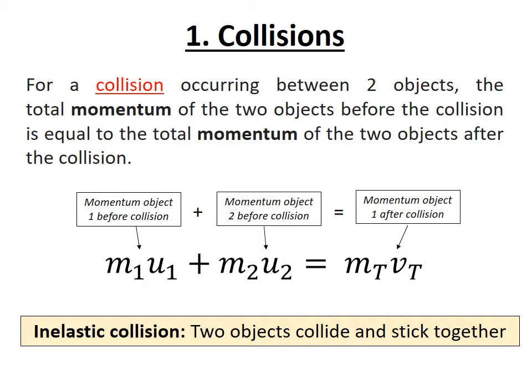Let's start with collisions. For a collision occurring between two objects, the total momentum of the two objects before the collision is equal to the total momentum of the objects after the collision. Now there is an equation here, it's got lots of different numbers in it, but this is really very straightforward and I'm going to show you how this works by doing some examples with you on the next few slides. The kind of collision that we're going to be investigating is what we call an inelastic collision - it's where two objects collide and then stick together and move off together.